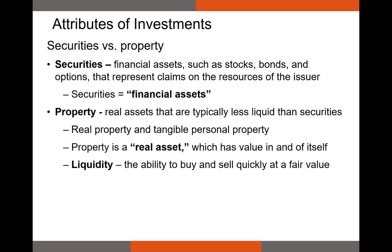We often break down assets into securities and property. Securities are financial assets that provide their owner a claim on specific real or financial assets, but you can't touch a security. Property, on the other hand, is a real asset — it's tangible. Real estate, equipment, or a car are all real assets. One big issue with property and other real assets is a lack of liquidity — they're hard to sell at a fair value. Liquidity is the ability to buy and sell quickly at a fair value.